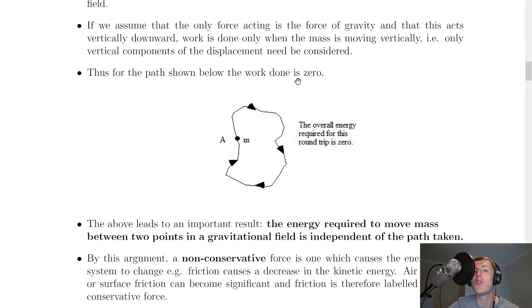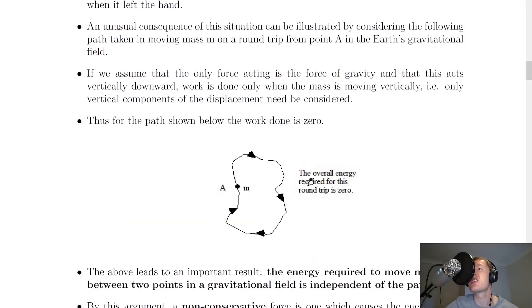Thus, for the path shown below, the work done is zero. If we look here, we're starting off with our mass M here at point A, we're going all the way up here, following the arrow all the way round, all the way back to the start. So the overall energy required for this round trip is zero. And the reason is we're only considering work to be done here vertically, whereas the horizontal motion, we're assuming there is no work done. And because the mass has ended up back to where it started, then we must be able to say that the work done on it is zero, because its displacement is zero.